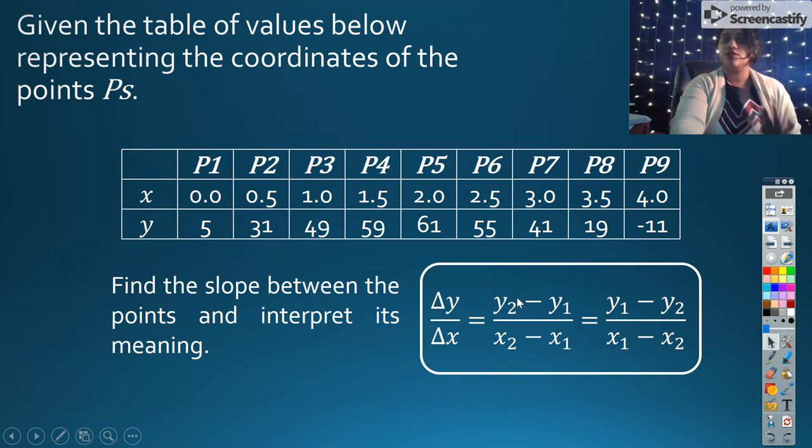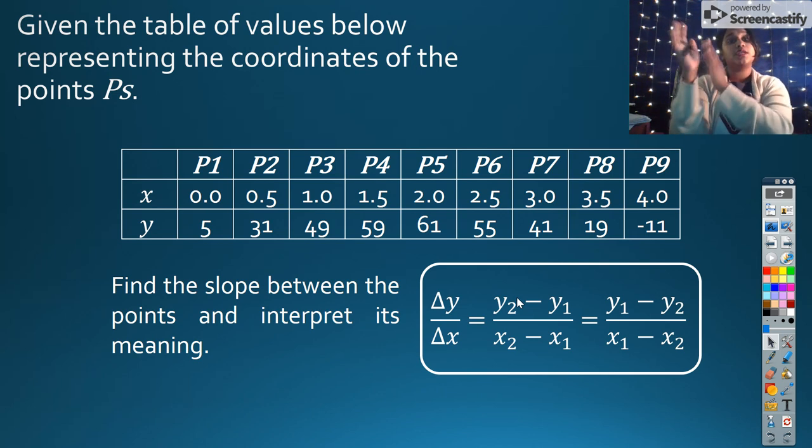And so I've written it both ways. You can either do y2 minus y1 over x2 minus x1, or the other way around. The biggest thing to be sure of is that both your xy coordinates are matched, as long as you're pairing them in the correct order.